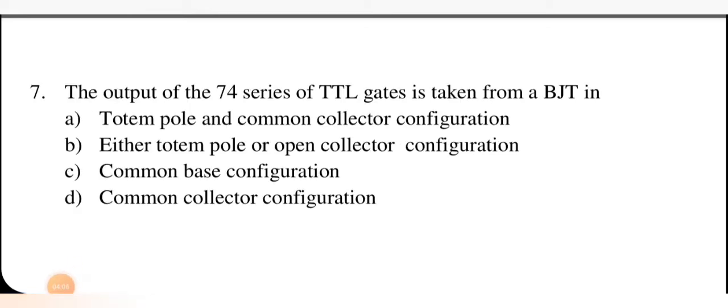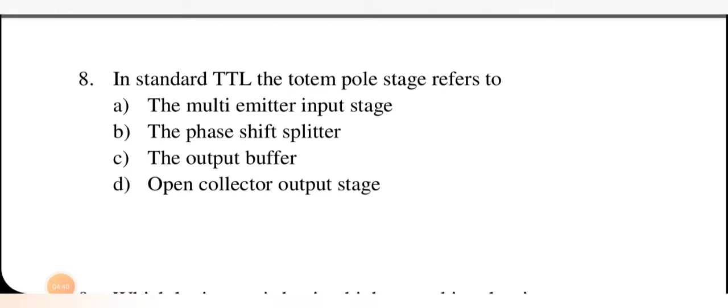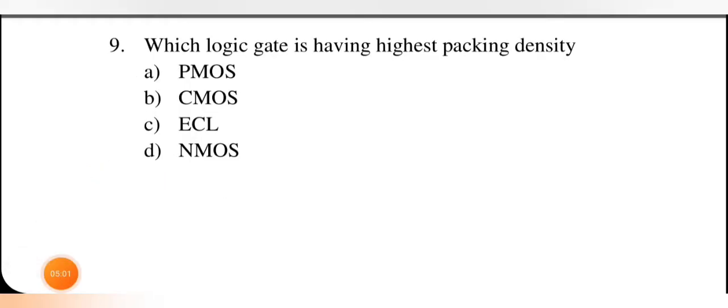The output of the 74-series of TTL gates is taken from a BJT in either totem pole or open collector configuration. So option B is the right option. In standard TTL, the totem pole stage refers to the output buffer. So this is the output buffer — option C is correct.